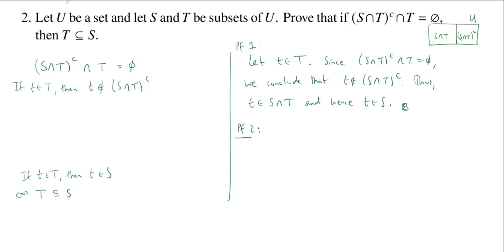So, let's start from the assumption. We know that the empty set is equal to the complement of the intersection of S and T intersected with T. Now, there's a rule about how you take the complement of an intersection. This is equal to the union of the complements.